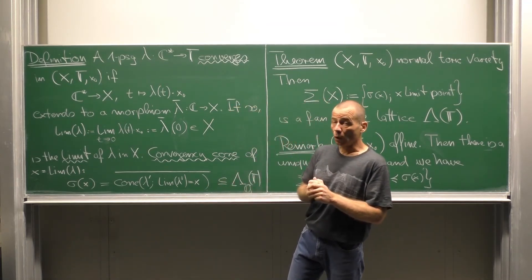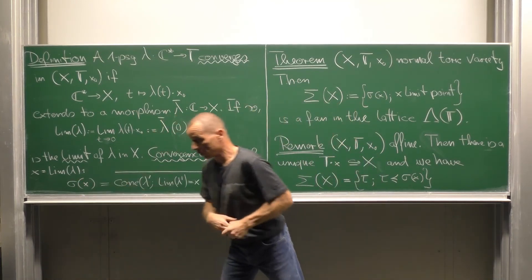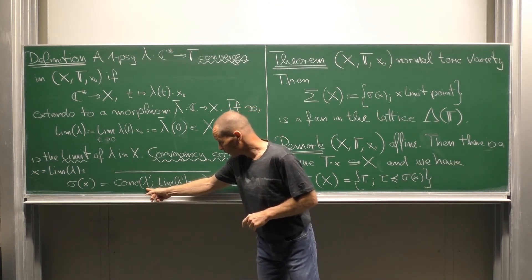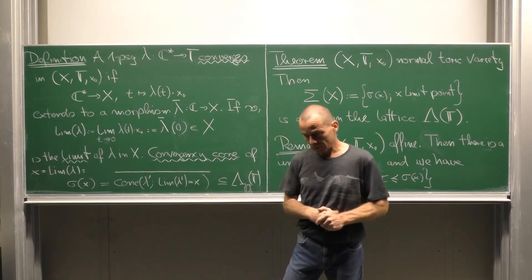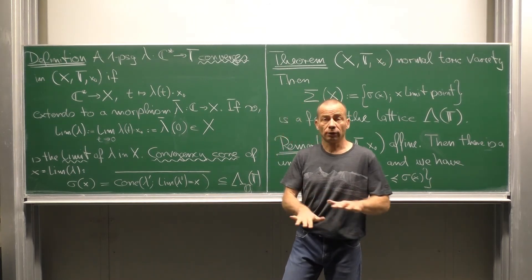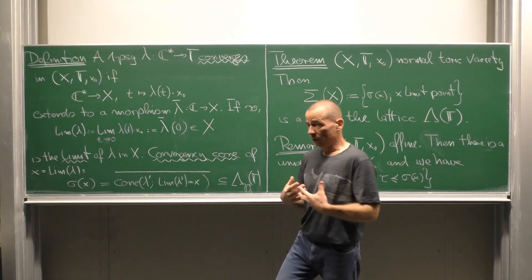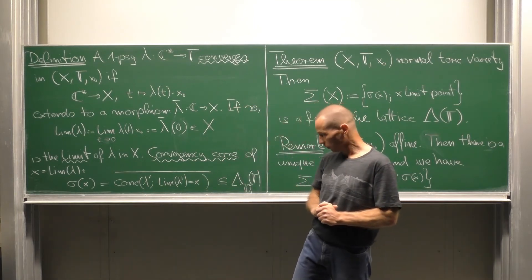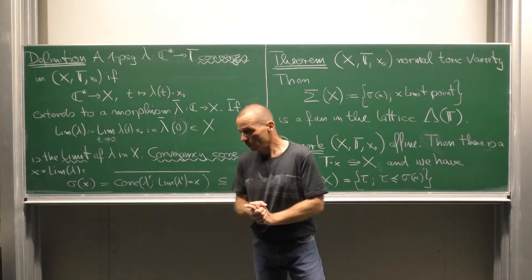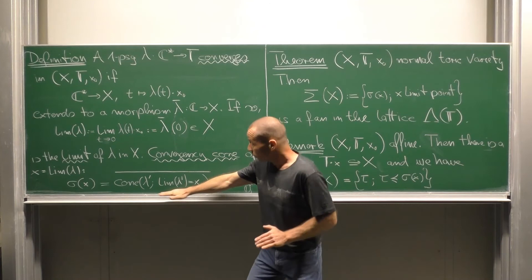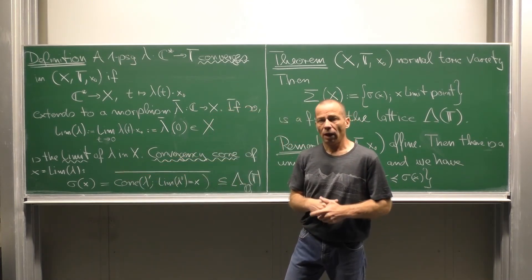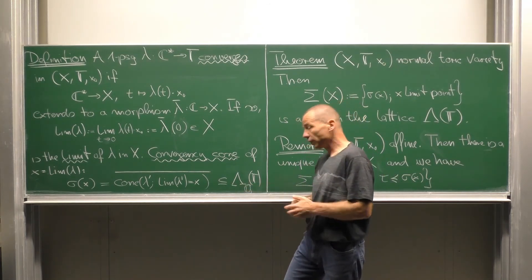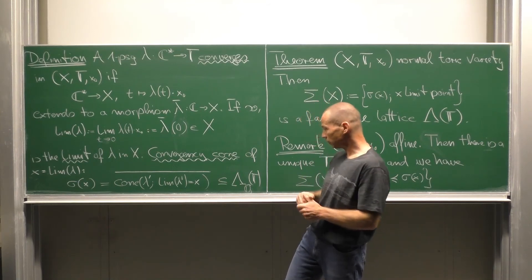The convergency cone of the limit point x of a one parameter subgroup lambda is defined as follows. We look at all one parameter subgroups lambda prime of T, which also have our x as a limit. And then look at the cone generated by them. That means all finite non-negative linear combinations over such one parameter subgroups. We have already seen that in general this will give us an open cone. So we take this cone and pass to its closure. And then we obtain a subset living in the rational lattice space associated with the lattice of one parameter subgroups of our torus T.